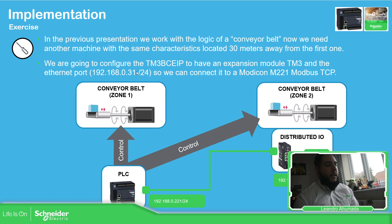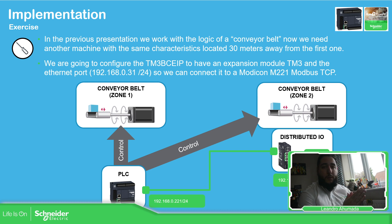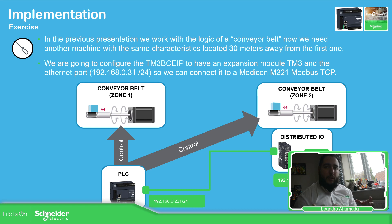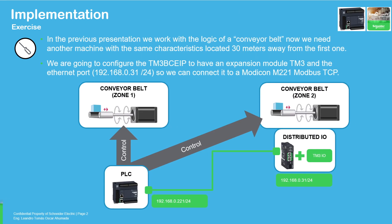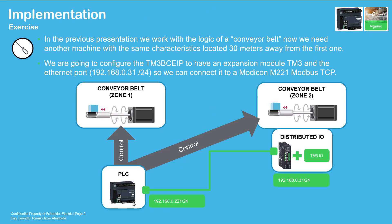My initial idea was to recreate one of the projects we've used for the conveyor belt and replicate that in a distributed IO, but I changed my mind. What I'm going to do is show how we can connect the TM3 bus coupler over Modbus TCP with the Modicon M221. The idea is to have the PLC M221 on the network connecting to a distributed IO using a bus coupler over Modbus TCP with a TM3 module.